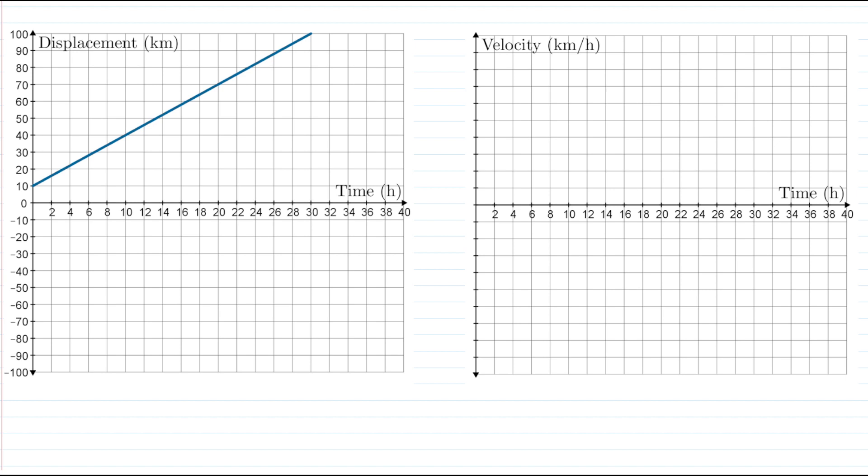Starting with this one here, notice that we have a straight line in our displacement-time graph, which means we have a constant rate of change. The displacement is always changing at the same rate, and that's the rate we want to graph on our velocity-time graph. Notice that velocity is measured in kilometers per hour, so we need to figure out how many kilometers per hour the displacement is changing by. To do that we can just use any two points on the graph and find the slope.